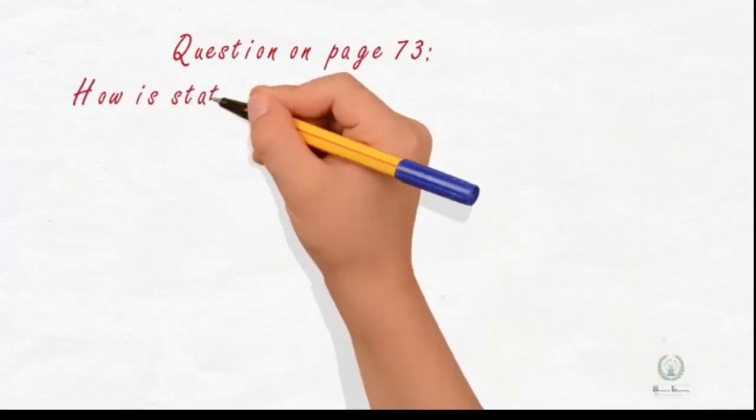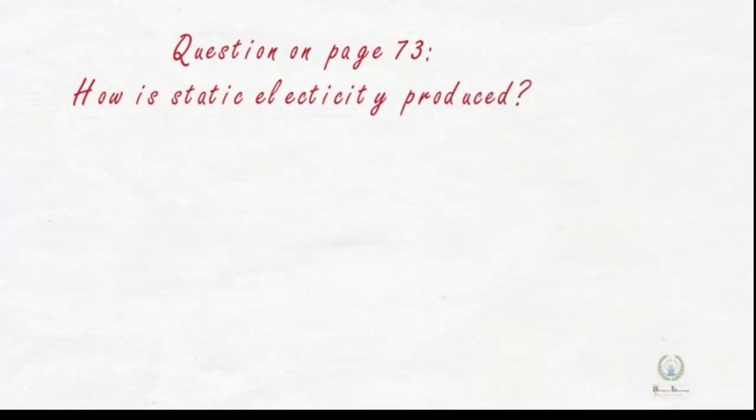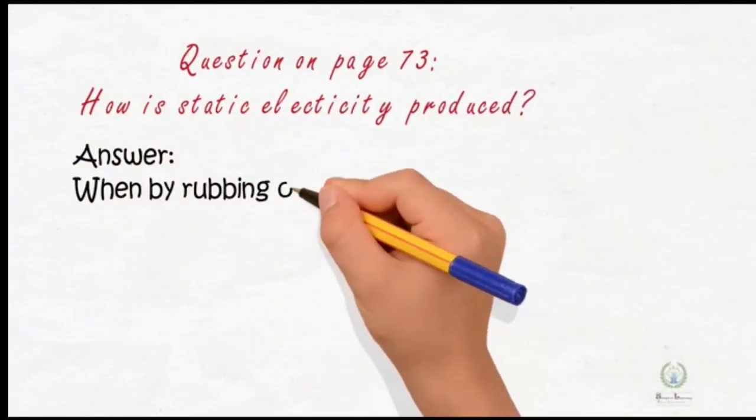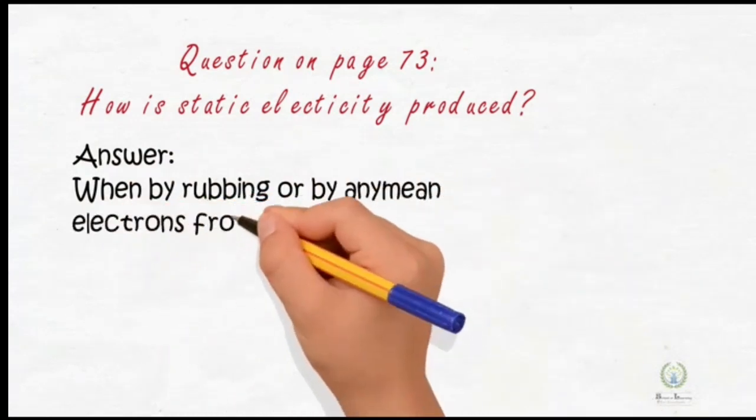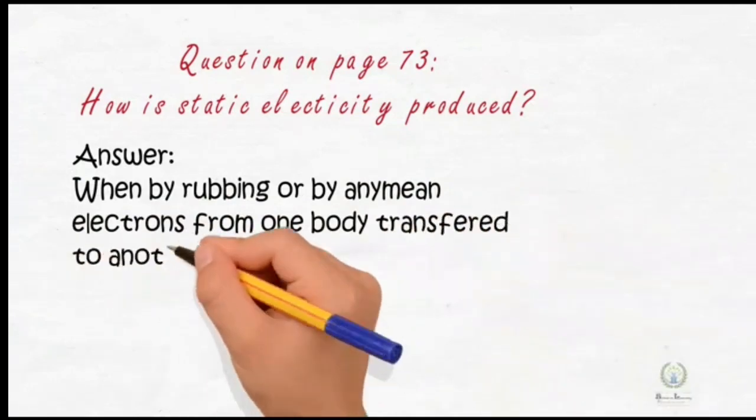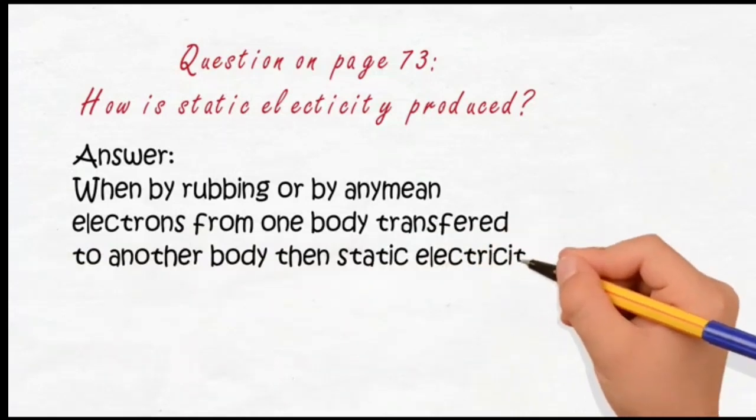How is static electricity produced? We can write the answer of this question as: when by rubbing or by any mean, electrons from one body transferred to another body, then static electricity is produced.